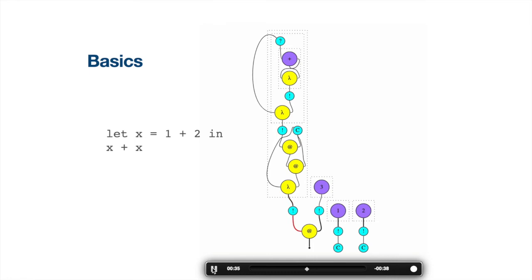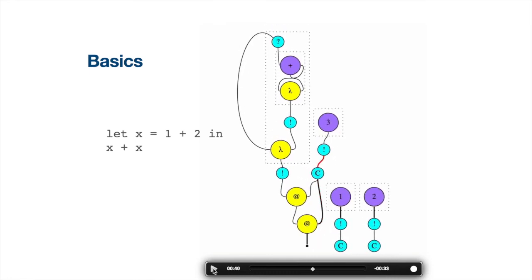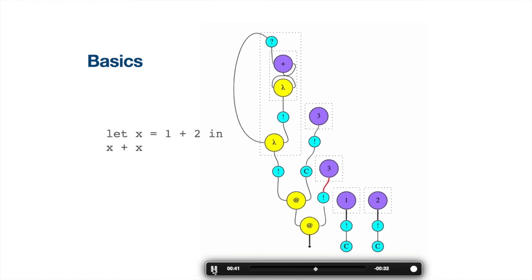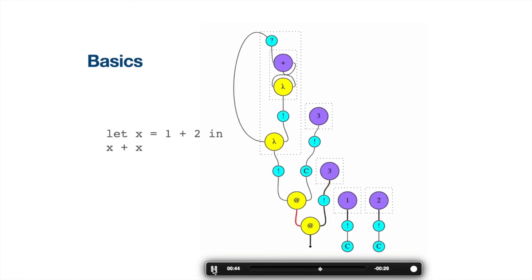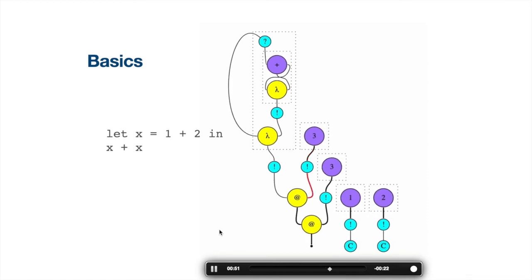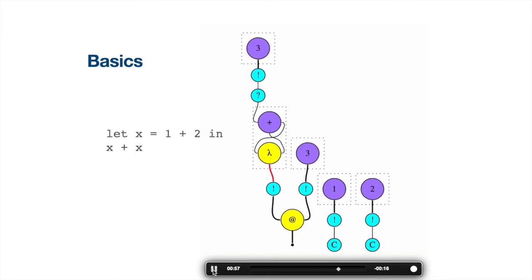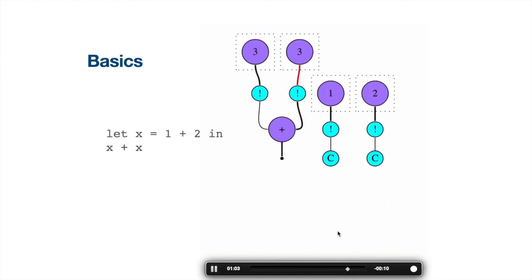Now we evaluate x plus x. The constant 3 is shared by the arguments to the two application nodes. At this point, we have to copy the value of 3, and it will be used by the different application nodes. This graph represents the term 3 plus 3, and the evaluation procedure is the same as before. After a few steps, we get the graph 3 plus 3, and after several more steps it is rewritten to 6.